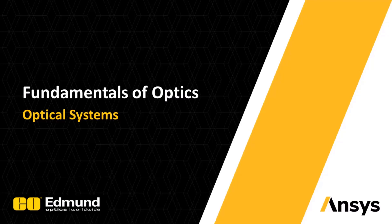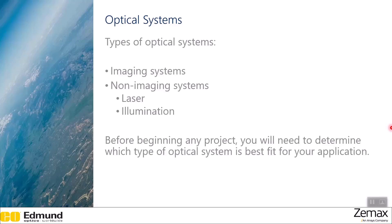In this video, we will be discussing different types of optical systems as well as a few examples of each. There are two main types of optical systems: imaging and non-imaging systems. Within non-imaging systems, there are also laser and illumination. It's important to understand these types of optical systems because before beginning any project, you will need to determine which type of system best fits your application.